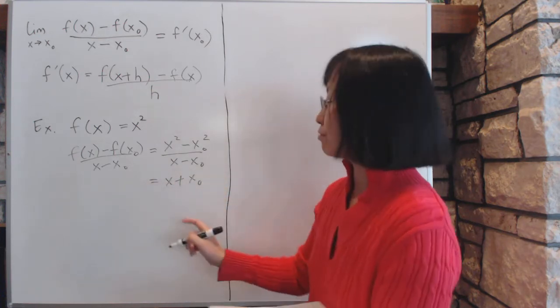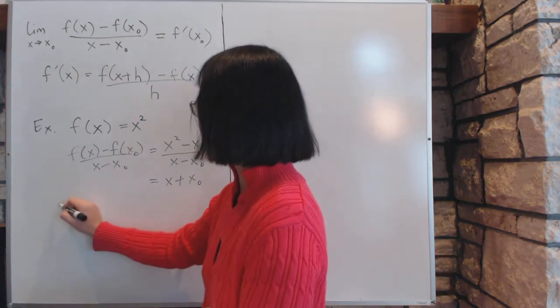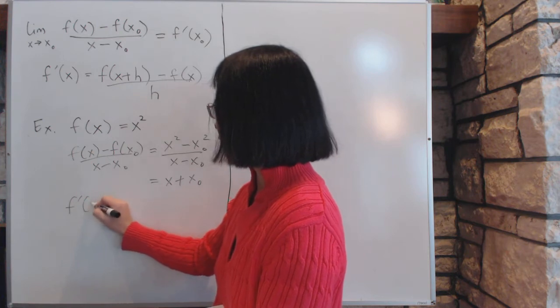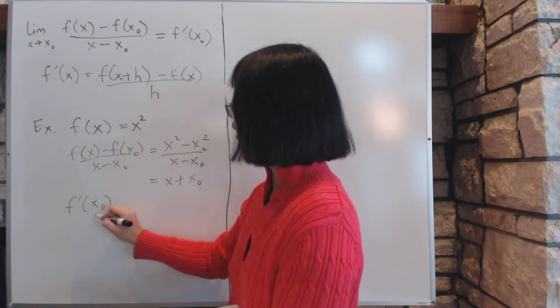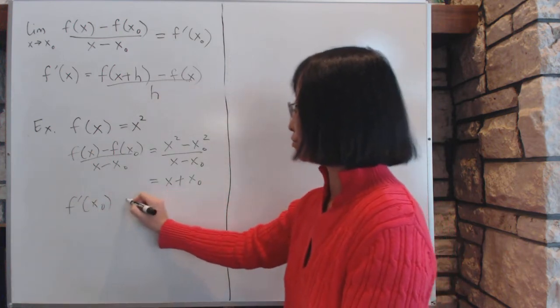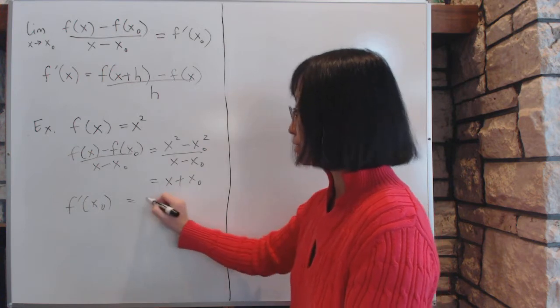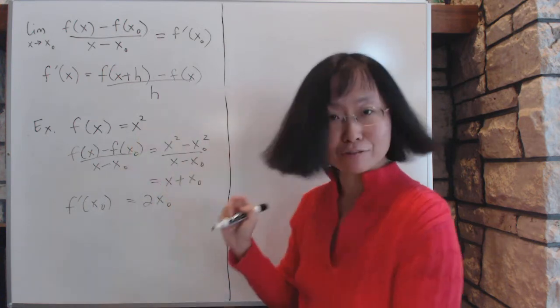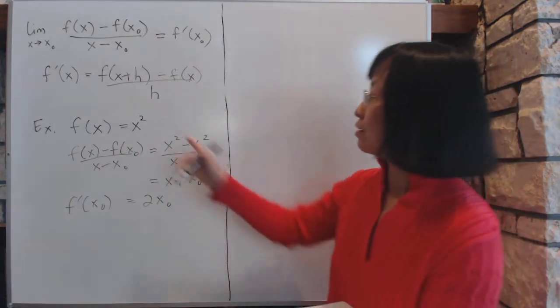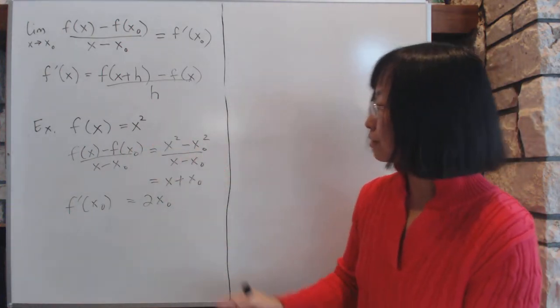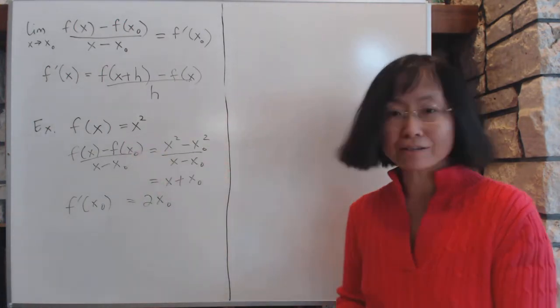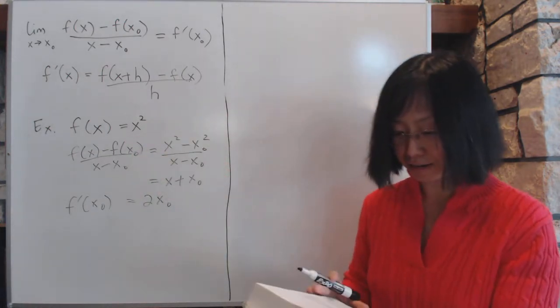Okay, so then when you do the limit, as the limit then becomes f prime of x0, as x approaches x0, so they both become x0, so you just have two x0. And that really is the derivative if you do it the old easy way, right? So you can see that the fundamental way and easy way you learned in the past are exactly the same thing.